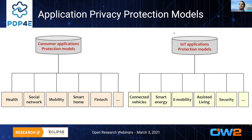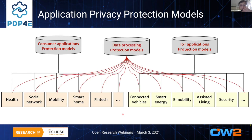We have models everywhere, and we define two types of models. One is application privacy protection models — how do we protect applications — across domains including health, social networks, mobility, smart home, FinTech from a consumer point of view, but also from an organizational and industry point of view: connected vehicles, smart energy, mobility, assisted living, and security. On top of those, you perform data processing with cross-domain analysis. All those must have their own application privacy protection models.